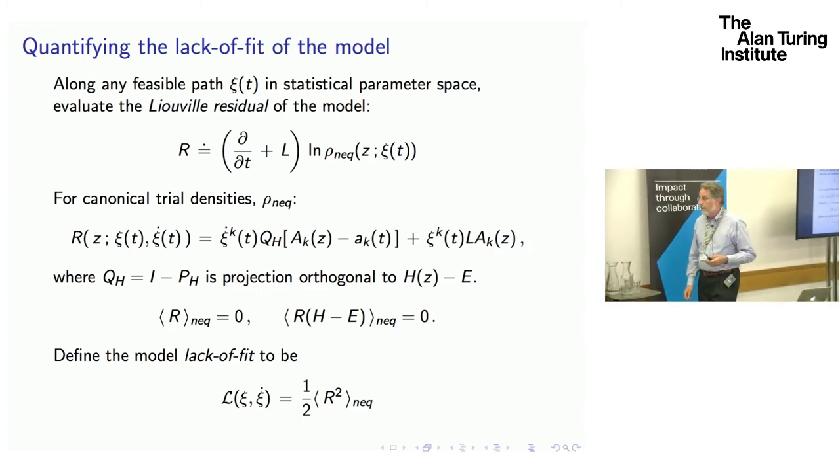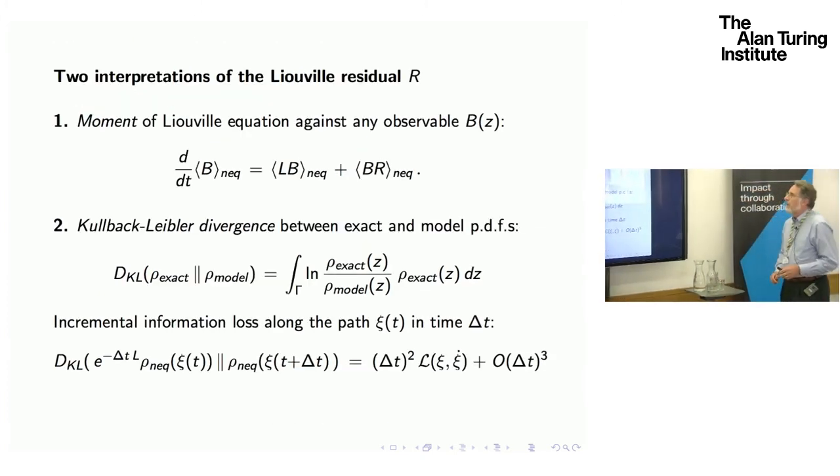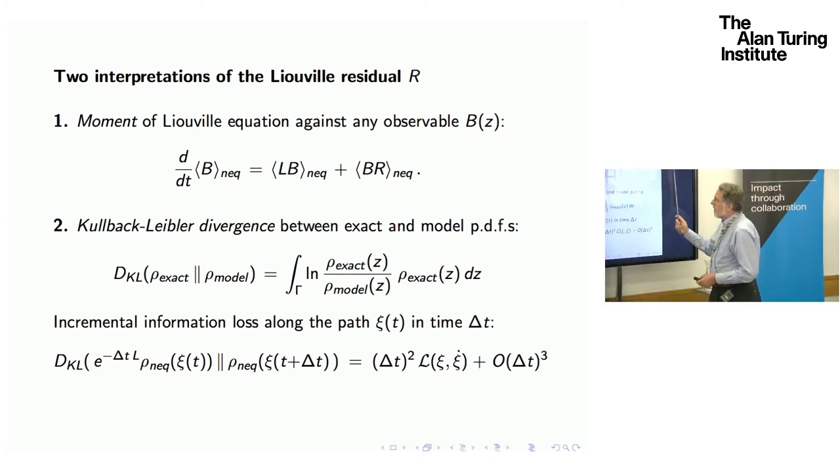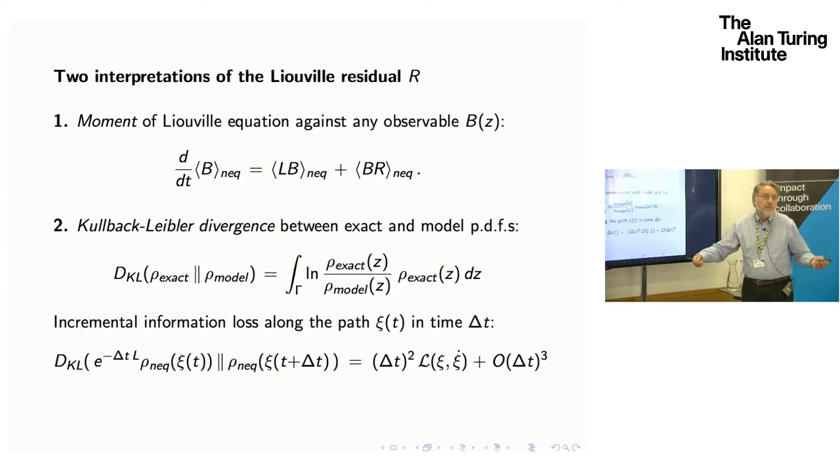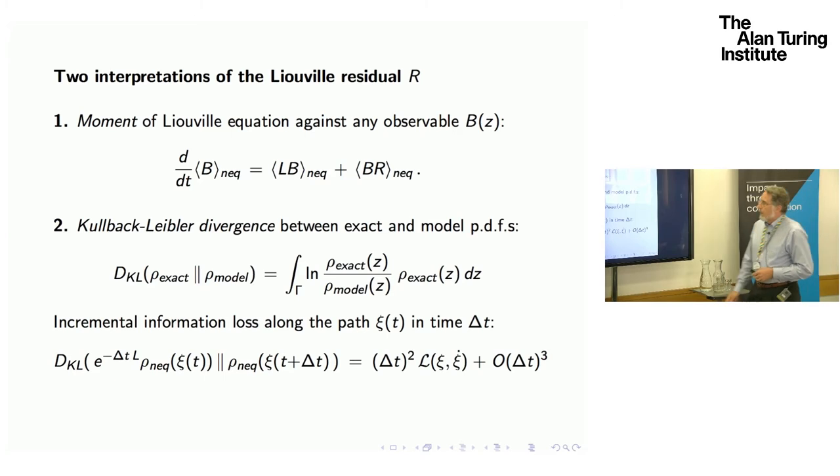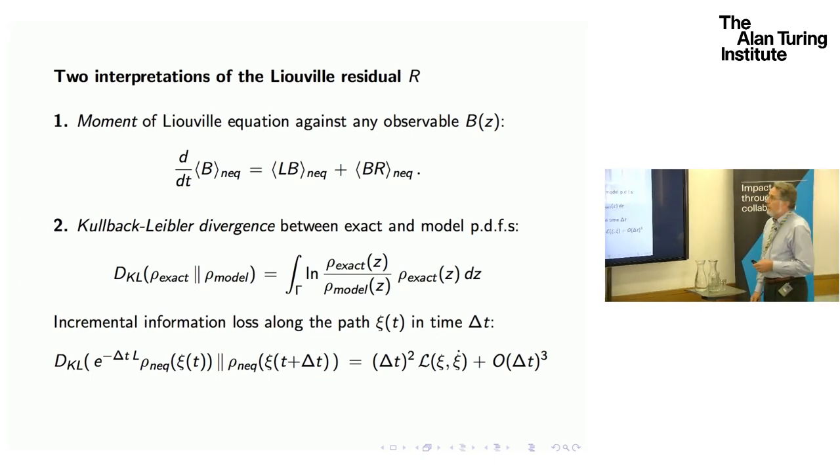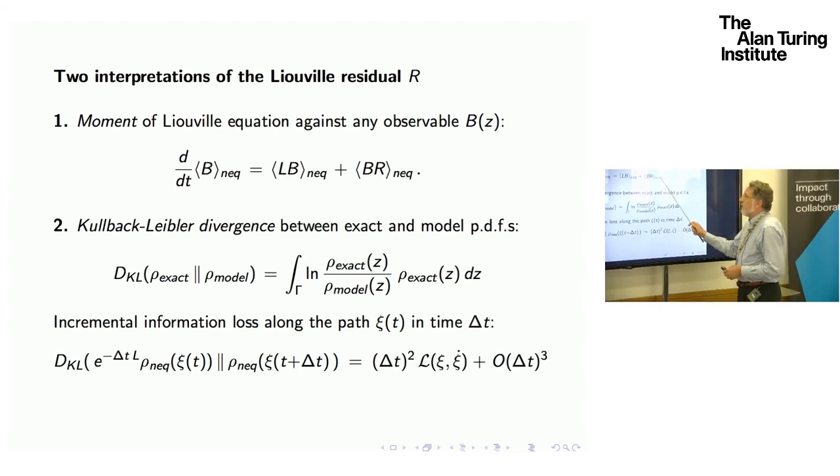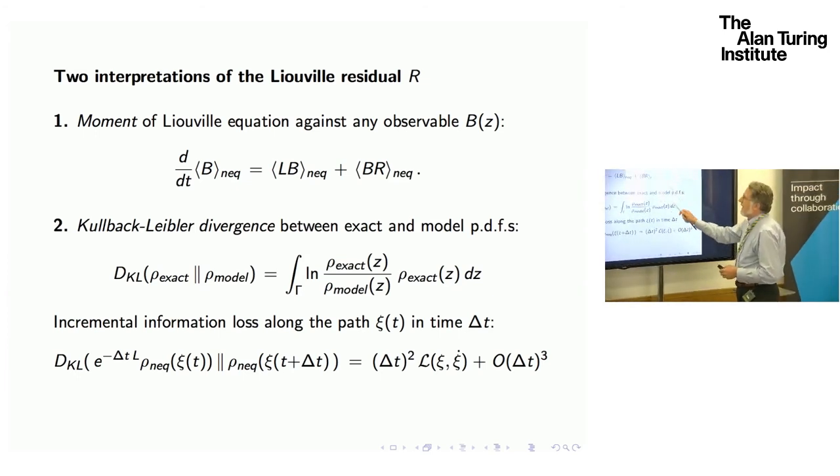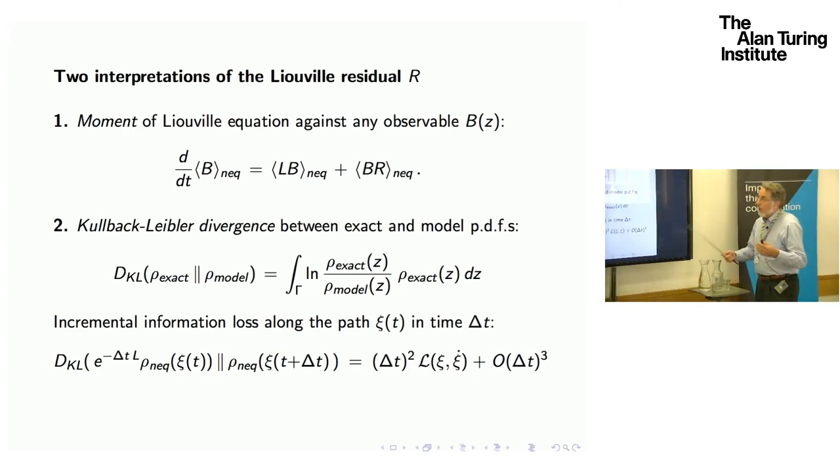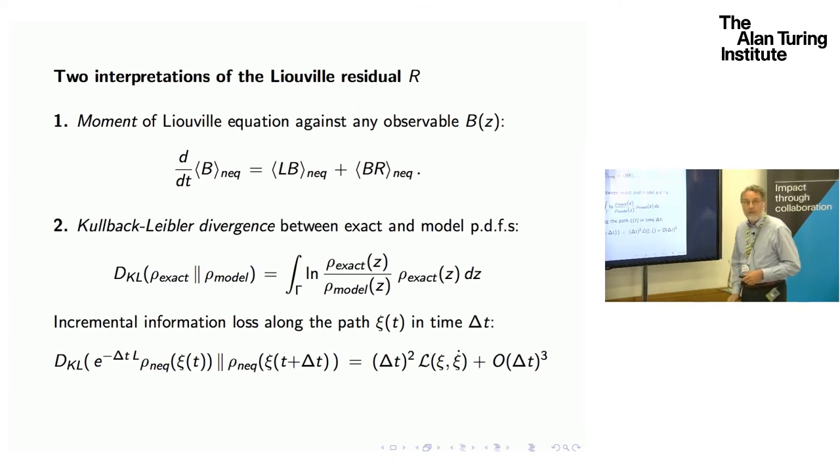I define my lack of fit as simply mean square of that, the mean square with respect to the observable at that moment. Now I want to tell you why that very reasonable choice is, in some sense, the intrinsic choice. Suppose you take any observable whatsoever, time-independent, and you look at its non-equilibrium mean. You obtain, first of all, a standard term, which is the expectation of the Liouville operator acting on the observable. Then you obtain this residual term, which is the covariance between the observable and this Liouville residual. This is going to be the term which gives us dissipation.